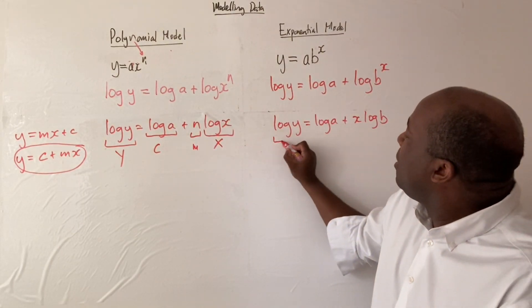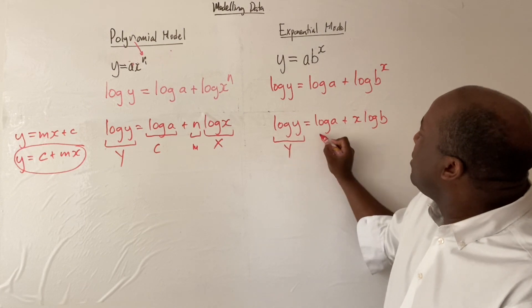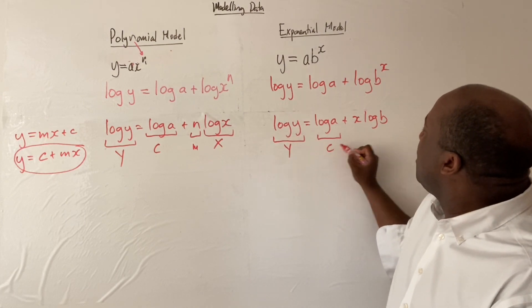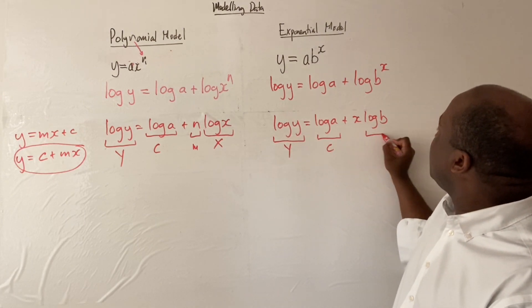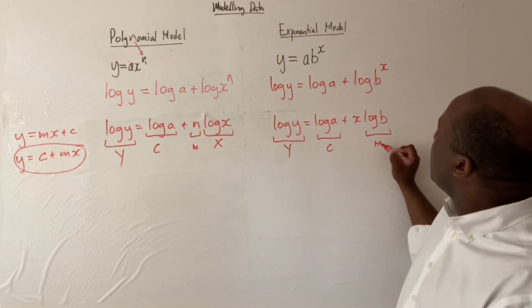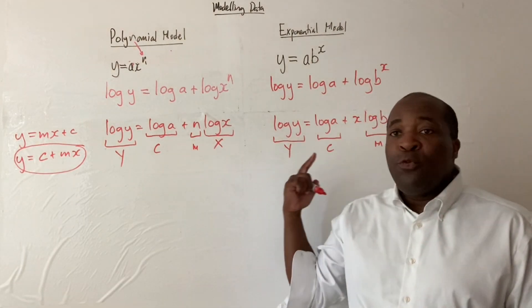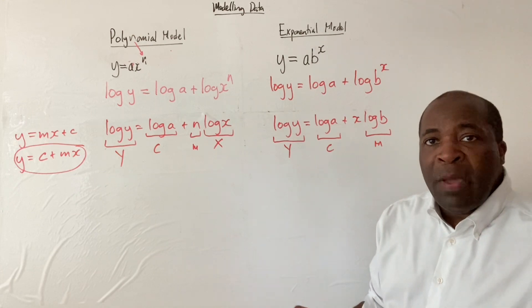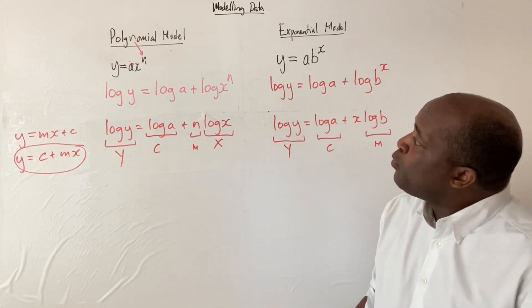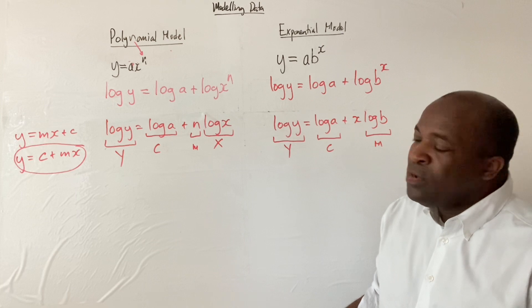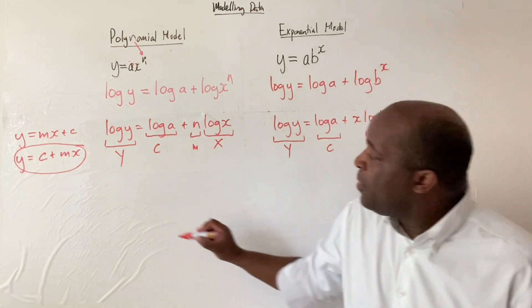From this part, this is our y, this is our c, and this is our m. You can recall or memorize those things, or you can work them out question by question, so you don't have to commit all of these to memory.